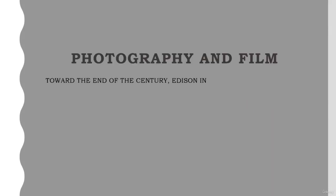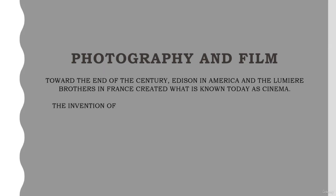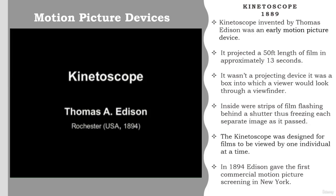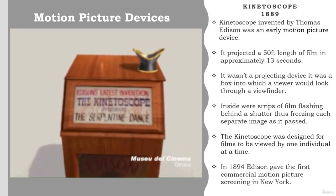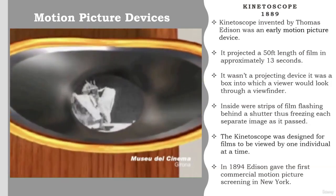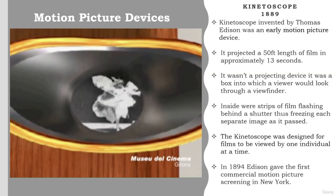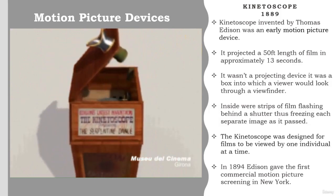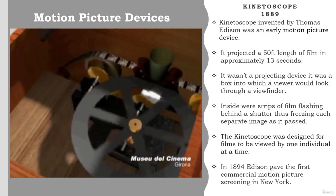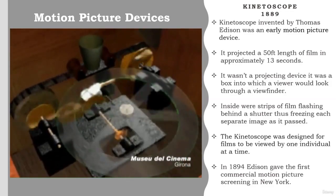Toward the end of the century, Edison in America and the Lumière brothers in France created what is known today as cinema. The invention of photography and moving pictures aided in the development of animation. The kinetoscope, invented by Thomas Edison, was an early motion picture device. Using celluloid film, it could project a 50-foot length of film in approximately 13 seconds. However, it was not a projecting device — it was a box into which a viewer would look through a viewfinder, with strips of film flashing behind a shutter, freezing each separate image as it passed. The kinetoscope was designed for films to be viewed by one individual at a time. In 1894, Edison gave the first commercial motion picture screening in New York.